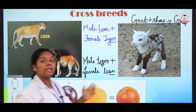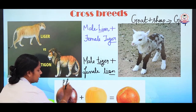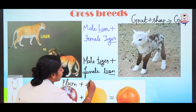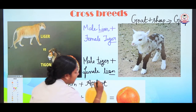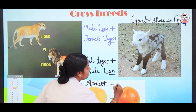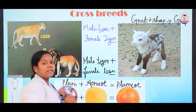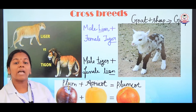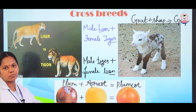And later when we see in plants — this is a plum. When the plum fruit is cross bred with apricot, it produces a new variety of fruit called plumcot. So the cross breed is not natural. It is manmade and is done due to the advancement in technology. These are all examples of cross breeds.